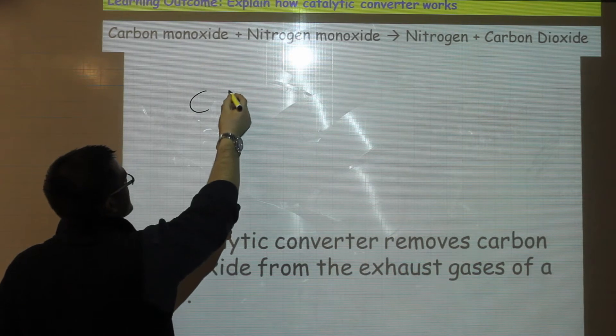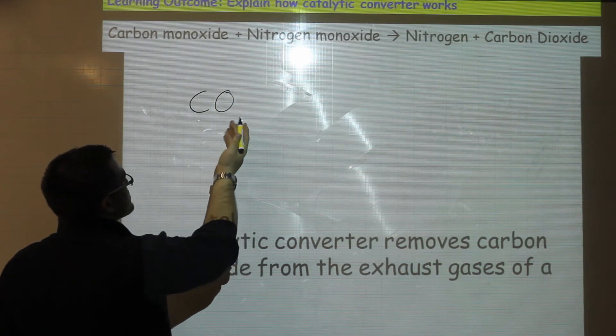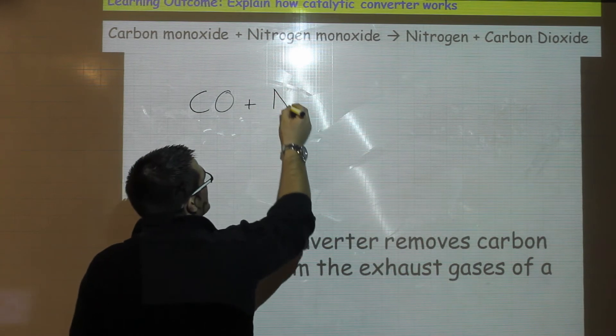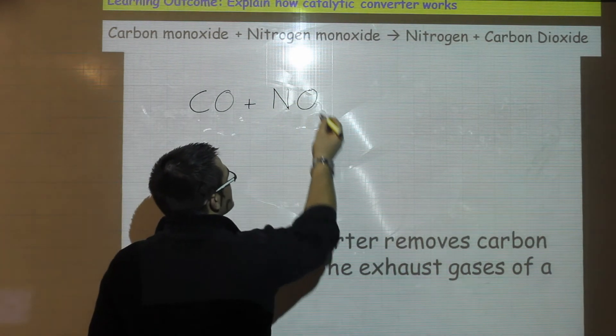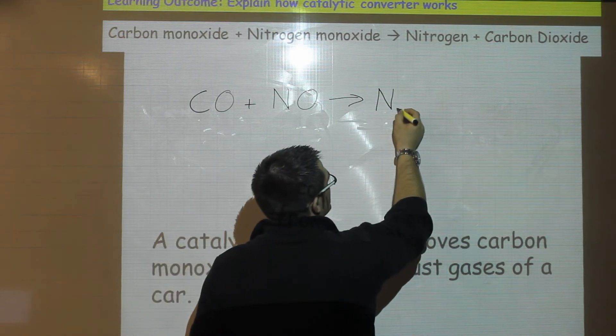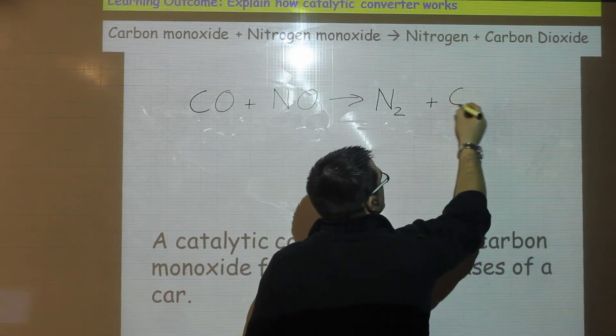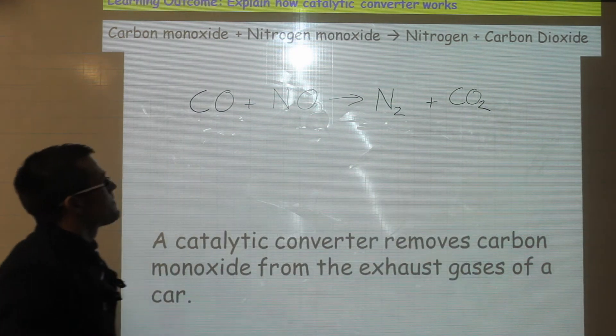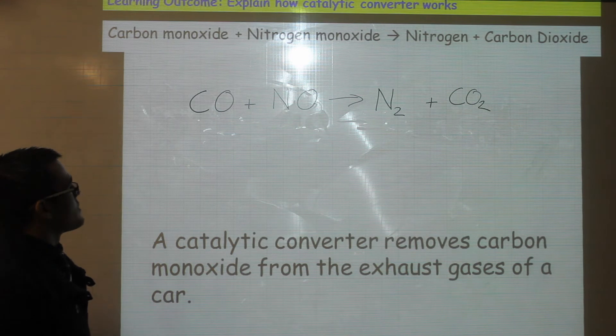Carbon is represented with a C and mono means one, so we have one oxygen. We react this with nitrogen monoxide, so the same, it has a single oxygen, and this gives out nitrogen which has a 2 next to it and carbon dioxide. Di meaning 2, so 2 oxygens. We need to balance this equation.